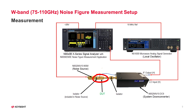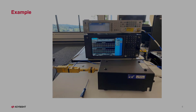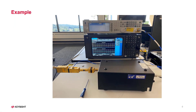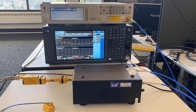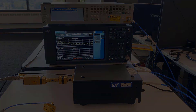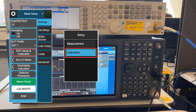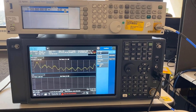Once calibration is done, insert the DUT between the noise source and the System Down Converter and perform the noise figure measurement. Let's look at an example of how to make a W-Band noise figure measurement. First, set up the measurement system without DUT and configure the parameters for calibration.